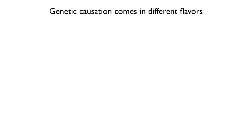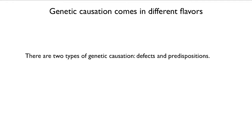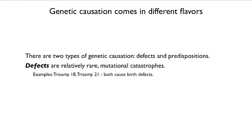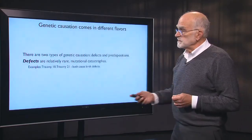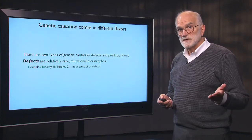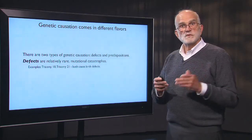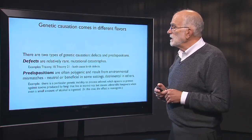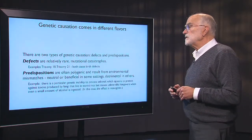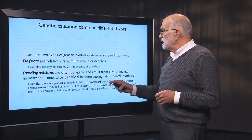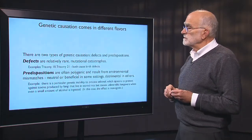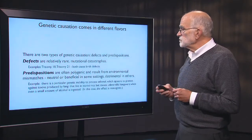Genetic causation comes in different flavors. There are two kinds: defects and predispositions. A defect is a fairly rare mutational catastrophe. Trisomy 18 and trisomy 21, where we have three copies of those chromosomes rather than two, both cause birth defects. Trisomy 18 is usually so serious that the child dies in utero or shortly after birth; trisomy 21 leads to developmental problems in the brain. Predispositions are different — they are usually polygenic, result from environmental mismatches, and are neutral or beneficial in some settings but detrimental in others.